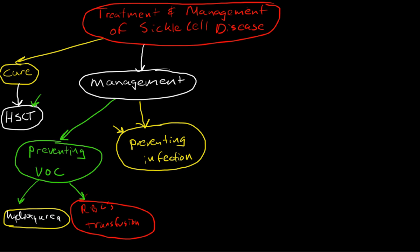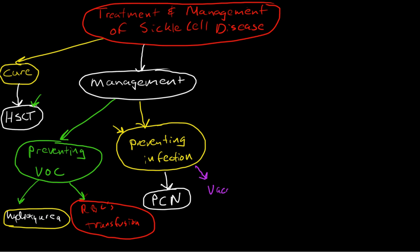Prevention of infection really is critical. There are two aspects to consider. One is the use of prophylactic penicillin in children under five years of age — they receive penicillin on a daily basis to prevent sepsis and bacteremia. The other critical aspect of preventing infection is vaccinations, particularly pneumococcal vaccinations as well as other vaccinations like annual flu vaccines. It's very important to make sure that a sickle cell patient's vaccinations are up to date.